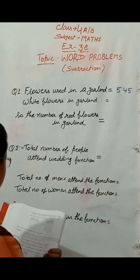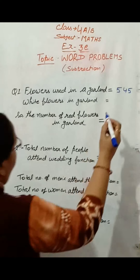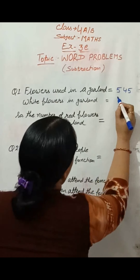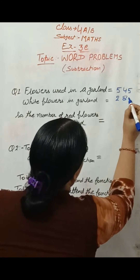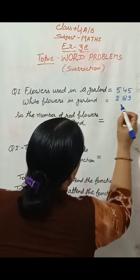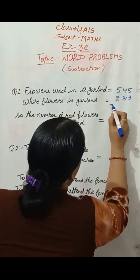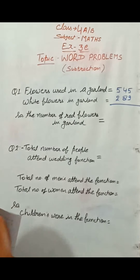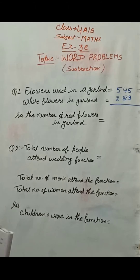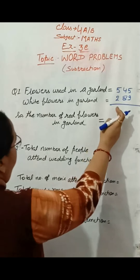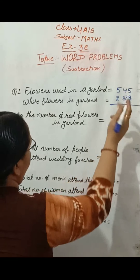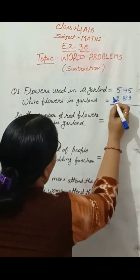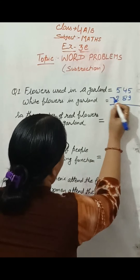To find out the red flowers in the garland, we have to subtract 289 from 545. Now let's subtract it.